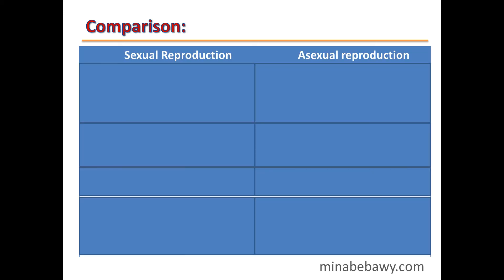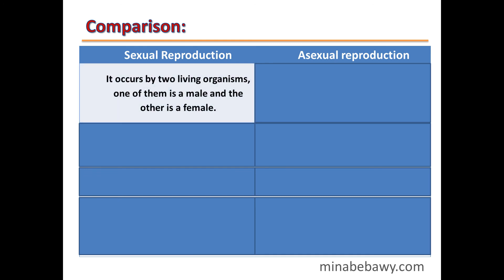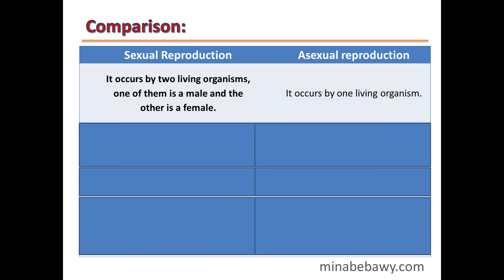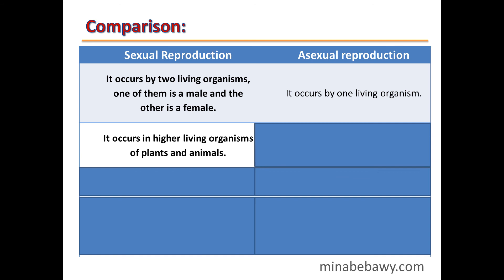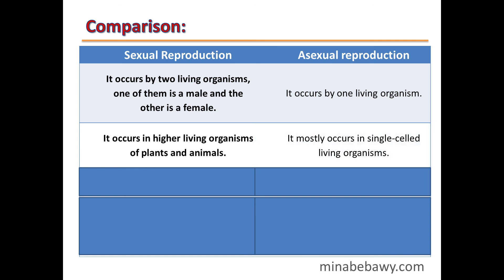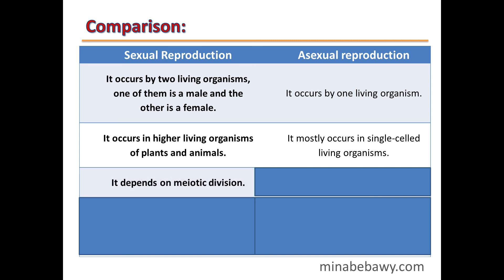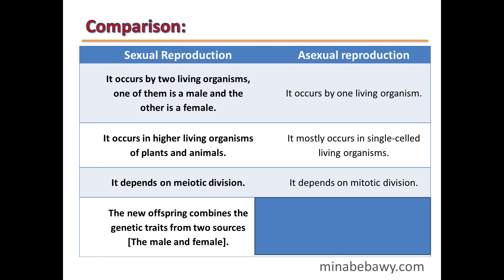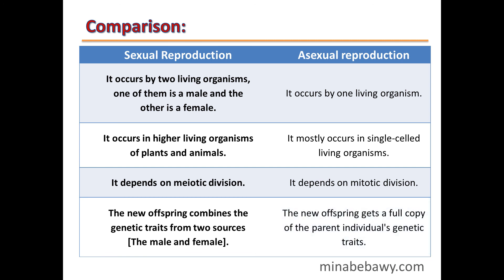Comparing sexual and asexual reproduction: sexual reproduction involves two organisms — one male and one female — and occurs in higher plants and animals, depending on meiotic cell division. Asexual reproduction involves only one organism and depends on mitotic division. In sexual reproduction, the offspring combines genetic traits from two sources (male and female), while in asexual reproduction the offspring gets a full copy of the parent's genetic traits.